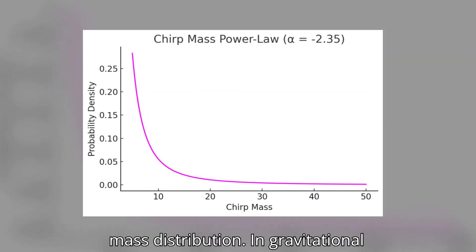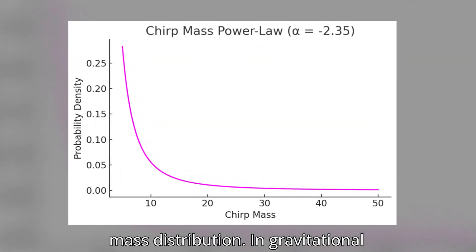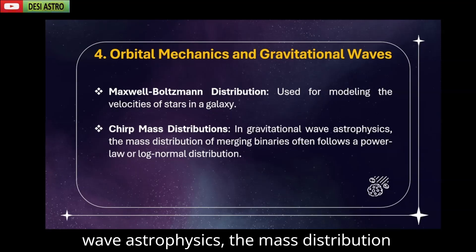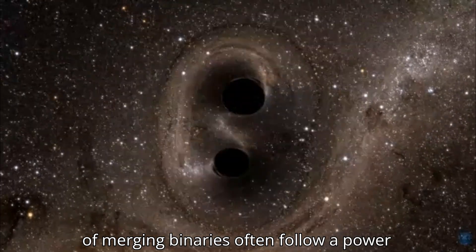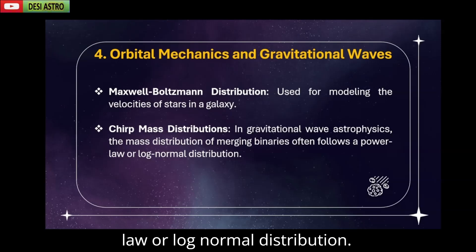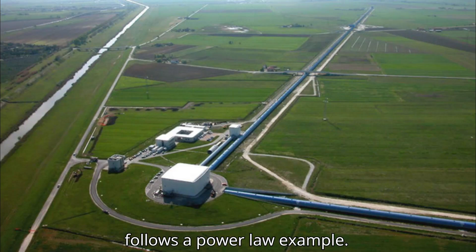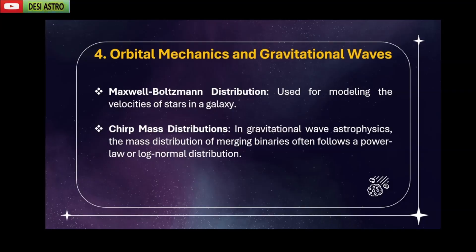Next is chirp mass distribution. In gravitational wave astrophysics, the mass distribution of merging binaries often follow a power law or log normal distribution. The distribution of binary black hole masses detected by LIGO Virgo follows a power law. For example, mass distribution of merging black holes.